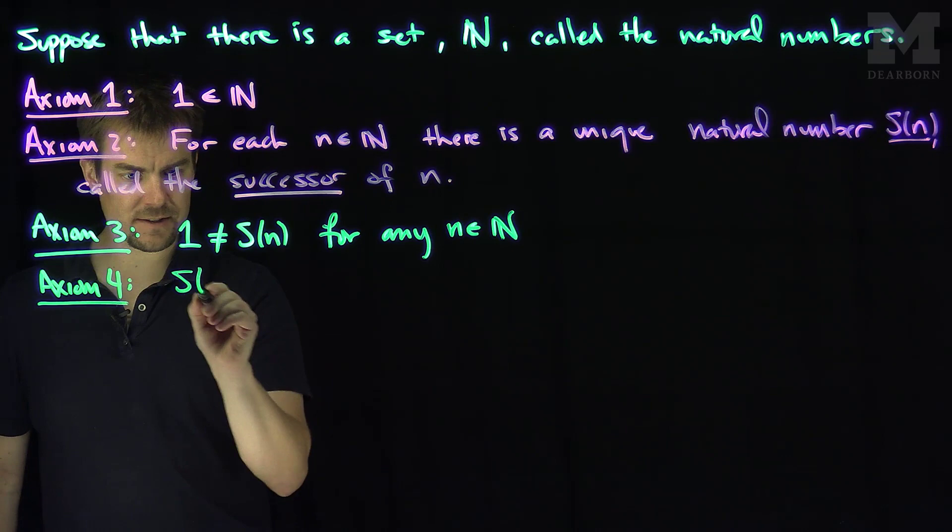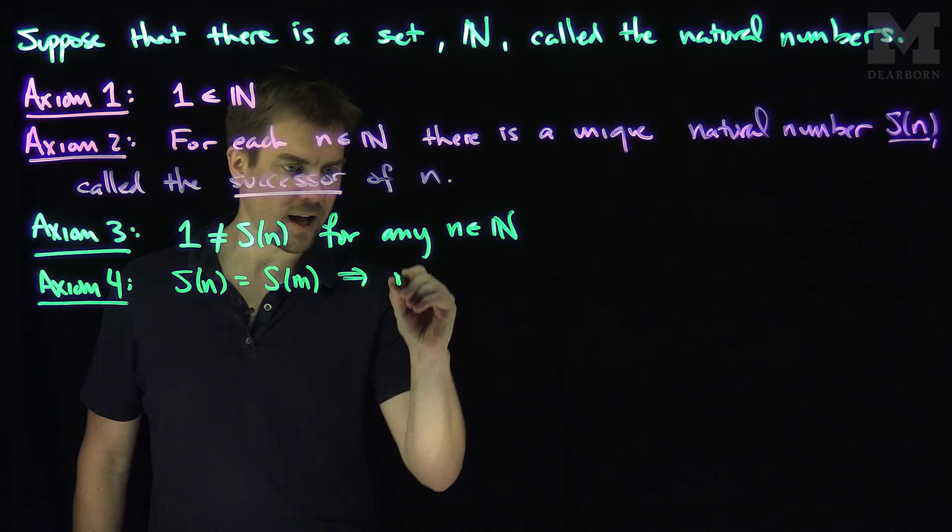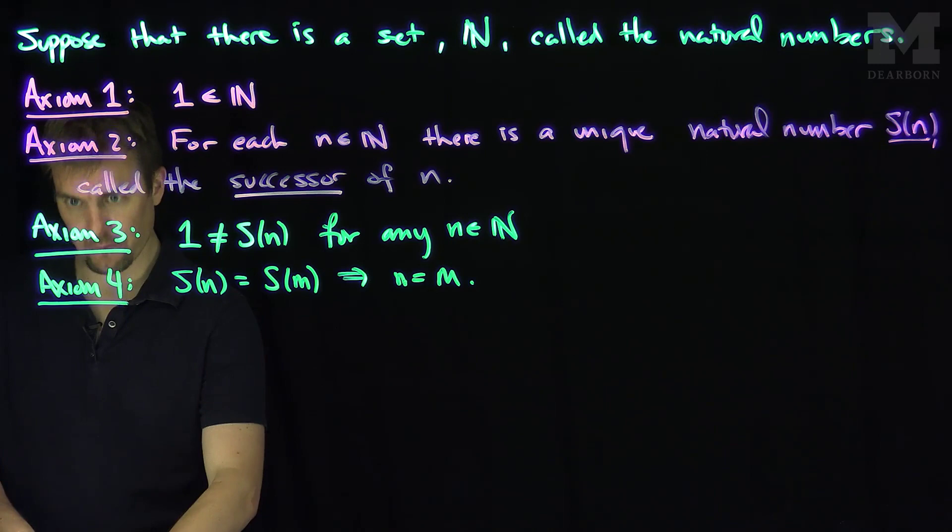Axiom 4 relates the second property: if the successor of n equals the successor of m, then n equals m. In other words, the successor function is an injective function.